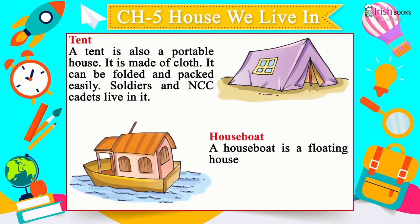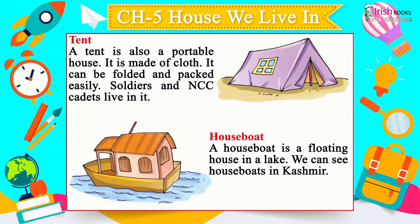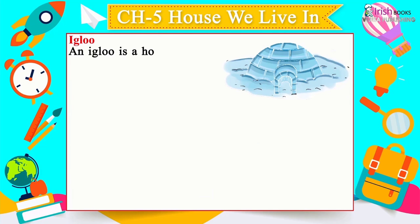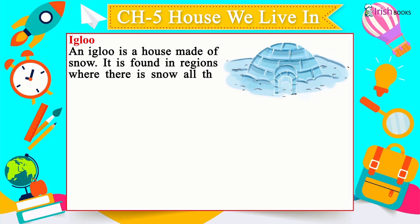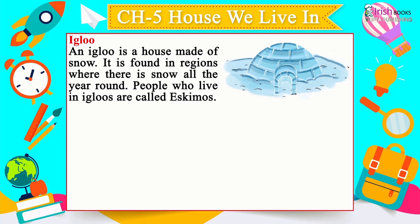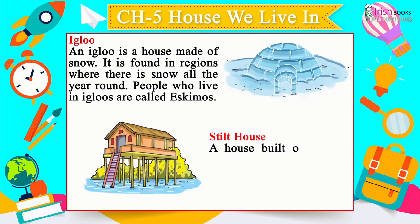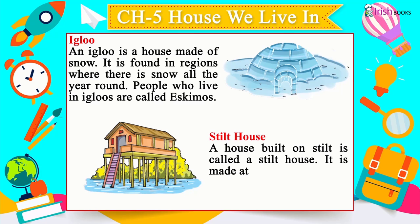A houseboat is a floating house in a lake — we can see houseboats in Kashmir. An igloo is a house made of snow, found in regions where there is snow all around; people who live in igloos are called Eskimos. A stilt house is built on stilts at places of very high rainfall.